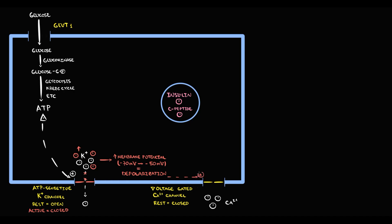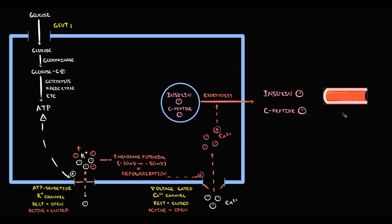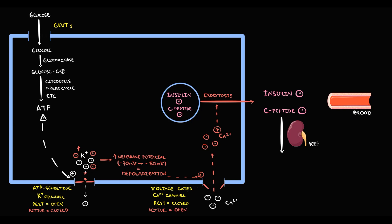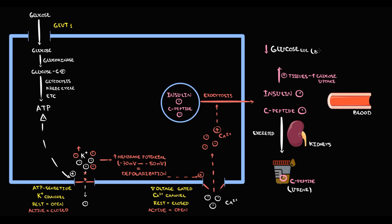And depolarization triggers activation of voltage-gated calcium channels. If calcium channels open, calcium by concentration gradient begins to enter into the cell. And increasing intracellular calcium triggers exocytosis of vesicles with release of insulin and C-peptide into the blood. The fate of C-peptide is rather prosaic — C-peptide goes to the kidneys, and kidneys excrete C-peptide from the organism into the urine. Insulin in the blood stimulates tissues to consume more glucose, and because glucose begins to enter the tissues, glucose level in the blood decreases.